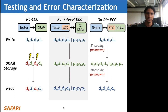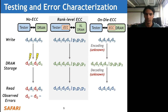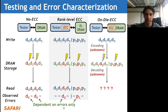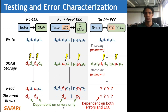Let's look at what happens when errors occur. With no ECC, if a 2-bit error occurs in bits d0 and d2, the tester gets the exact data stored in DRAM storage and knows exactly what happened. The case is very similar for rank-level ECC. But with on-die ECC, when errors occur within the DRAM storage, the read data the tester sees depends on both the errors inside the DRAM chip and the ECC decoding function, which is unknown to the tester. The errors observed depend on both their positions and on the unknown ECC logic - the tester doesn't really know what's going on within the DRAM chip.